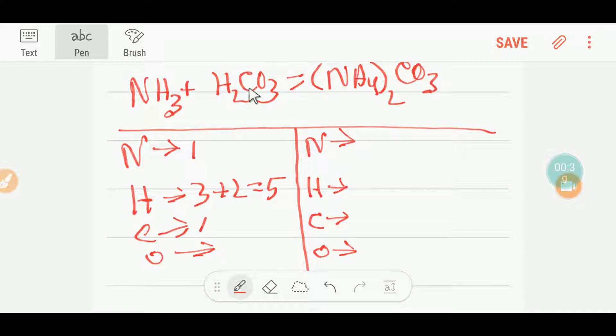Here we have one carbon and three oxygen. On the right-hand side, or product side, we have one times two, that is two nitrogen. Here we have four times two, that is eight hydrogen.